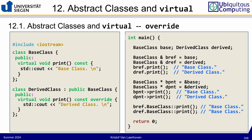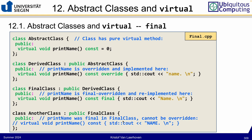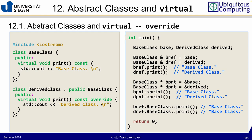You can also explicitly use the scope operator for references, calling the base class's print method directly through casting. Going from base to derived in this explicit way works, but not the other way around.